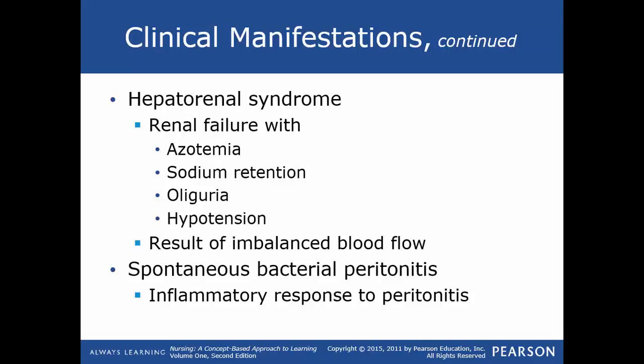Hepatorenal syndrome involves advanced cirrhosis and ascites with renal failure — azotemia (excessive nitrogenous waste in the blood), sodium retention, oliguria, and hypotension. It results from imbalanced blood flow causing vessel constriction within the kidneys. Spontaneous bacterial peritonitis is an inflammatory response that worsens ascites by increasing capillary permeability in the mesenteric GI tract. Manifestations may be subtle: increased abdominal pain, fever, increased ascites, worsening encephalopathy, and overall decline in condition.